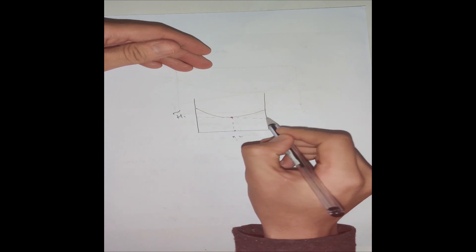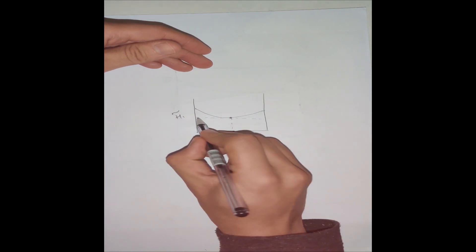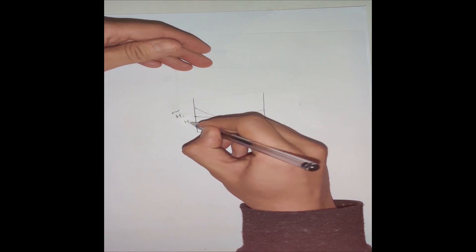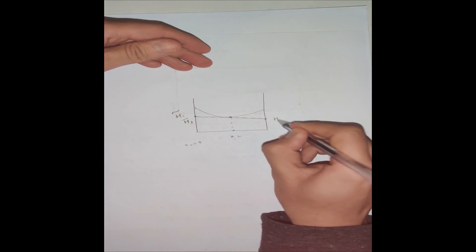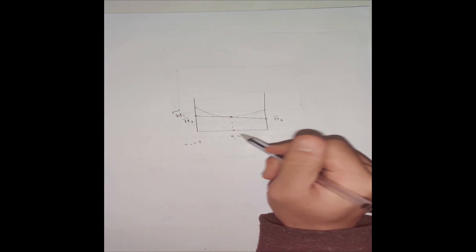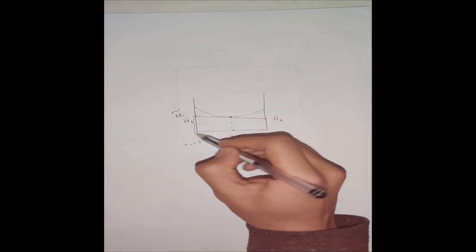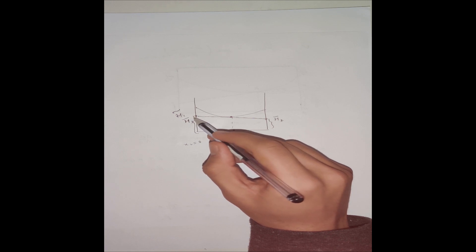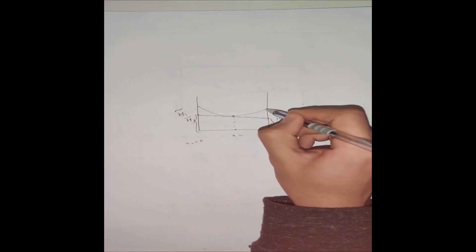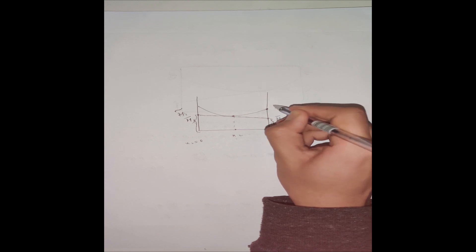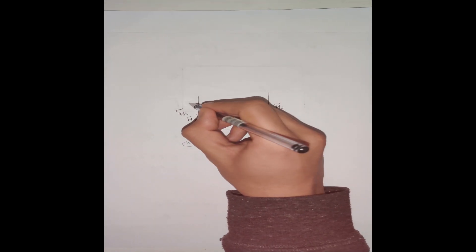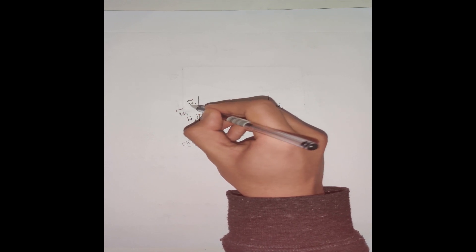If I want to find the partial molar enthalpy of components 1 and 2 at a point x₂, I simply draw a tangent at that point. At x₂ = 0, the tangent intercept gives the partial molar enthalpy of component 1, and at x₂ = 1 it gives the partial molar enthalpy of component 2. Since x₂ = 1 corresponds to pure component 2, that intercept is the molar enthalpy of pure component 2, and since x₂ = 0 corresponds to pure component 1, that intercept is the molar enthalpy of pure component 1.